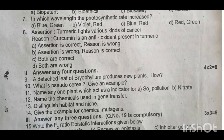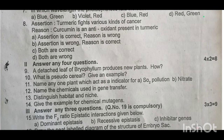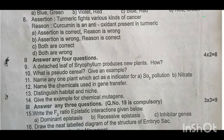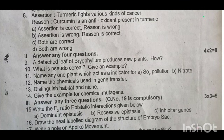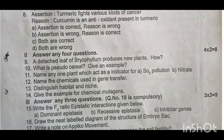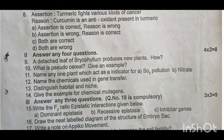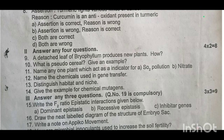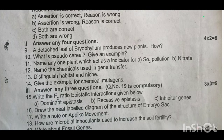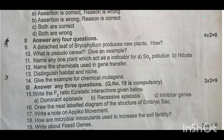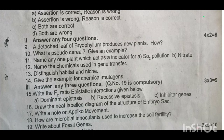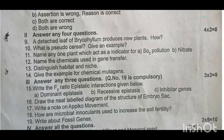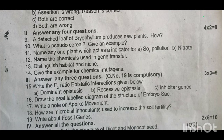Next, three-mark questions. These are compulsory questions. Fifteenth one, the F2 ratio of epistatic interactions given below — dominant epistasis, recessive epistasis, inhibitor genes. Sixteenth one, draw a neat labelled diagram of the structure of the embryo sac. Seventeenth one, write a note on apical meristem. Eighteenth one, how are microbial inoculants used to increase soil fertility? Nineteenth one, write about fossil genes.